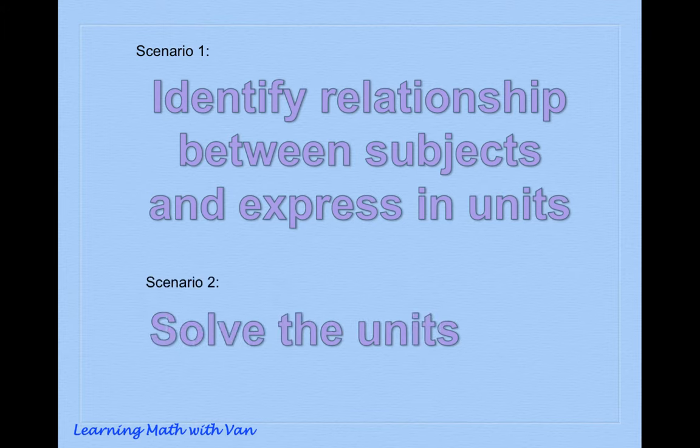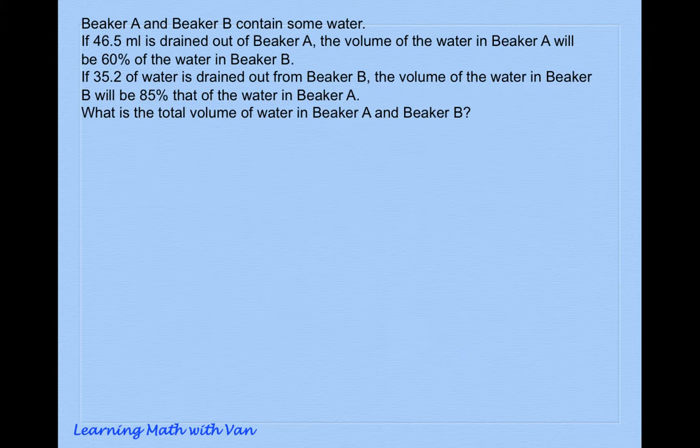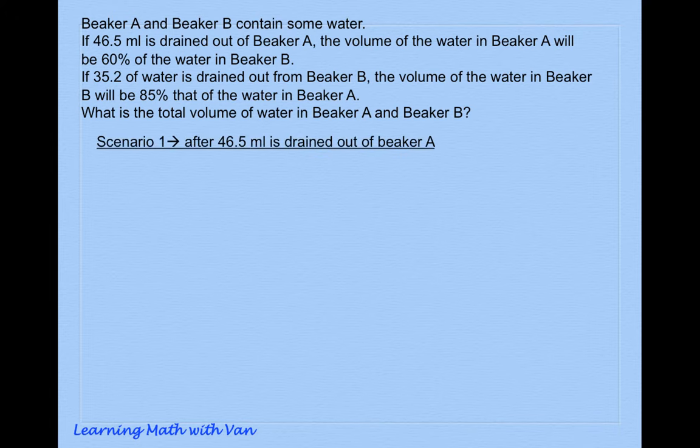So scenario two will help us solve the units. Let's go back to the question. In scenario one, after 46.5 ml of water is drained out of beaker A, the volume of water in beaker A will be 60% of the water in beaker B. When you see percentage, I will want to call the base 100%, because if beaker B is 100%, A will be 60%, and then reduce it to the simplest form: 3U to 5U.